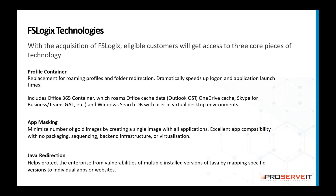The last item is Java redirection. Java can be a challenge for businesses to support, as there are often a number of different applications that require Java but they all require different versions. With FSLogix Java redirection, we're able to provide the right version of Java to any given application. You could have multiple versions of Java essentially installed — the ones not in use at the moment get hidden through the app masking process — but you're able to consistently present the correct version of Java to each application on an as-needed basis.